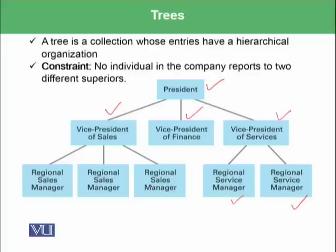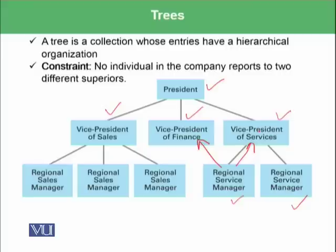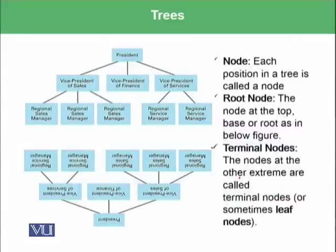We have a constraint that no individual in the company reports to two different superiors. This means a regional manager reports to only one vice president, not both. In other words, one child shall not have two parents, though one parent may have two children. Here are different terminologies within trees — one is called a node: each position in a tree is called a node.